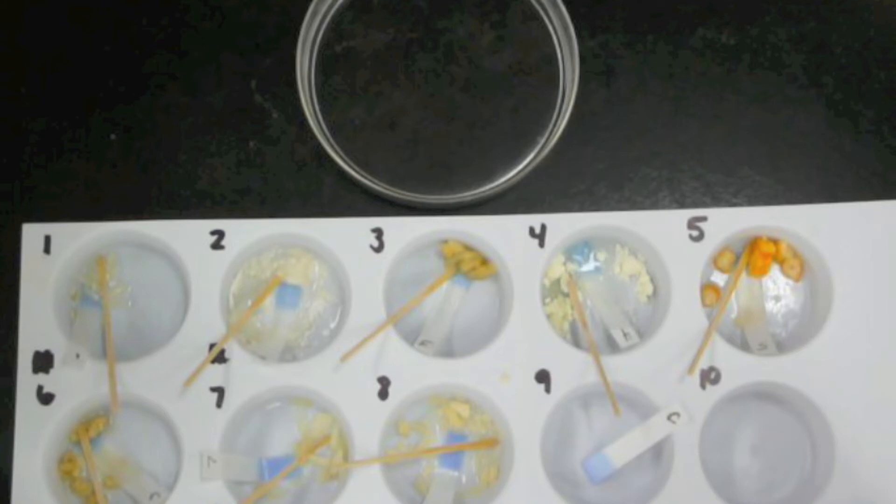Now we will move all the strips into the vinegar and alcohol developing solution. This will show us whether the food contains protein or not.